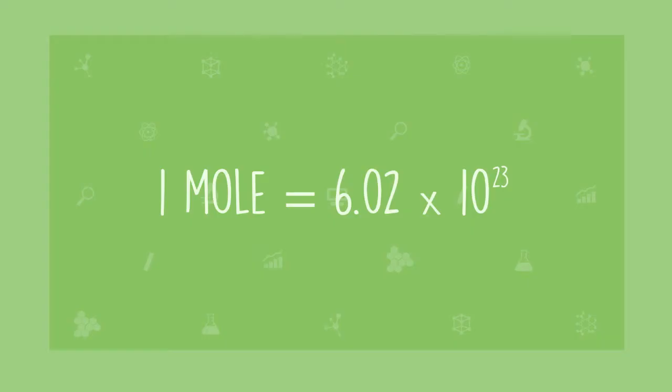In module 10 we meet another scientist with a moon crater named after him, the Italian scientist Avogadro. The work Avogadro did in the 19th century helps us measure small things like atoms and molecules using a unit of measurement called a mole.